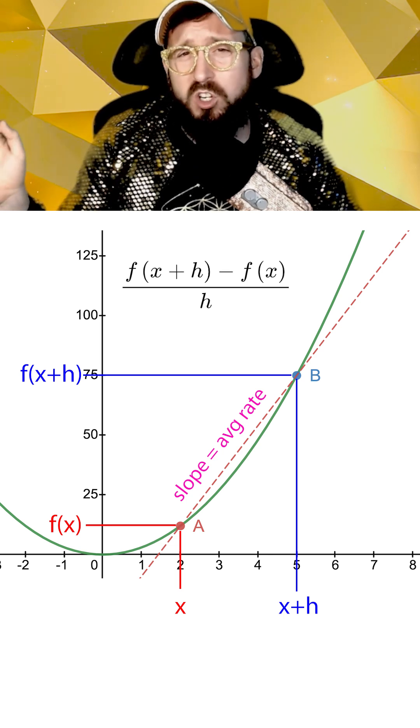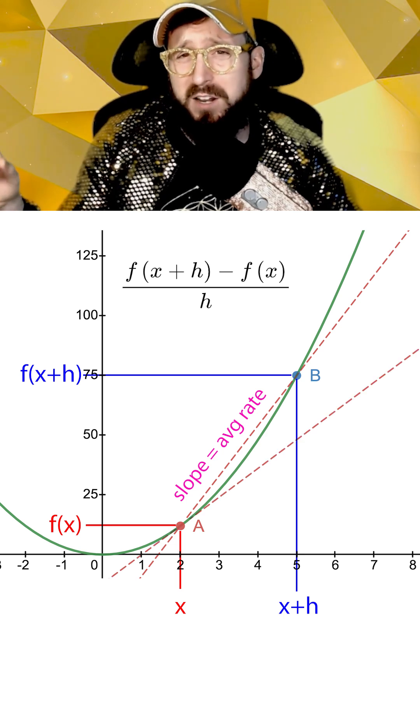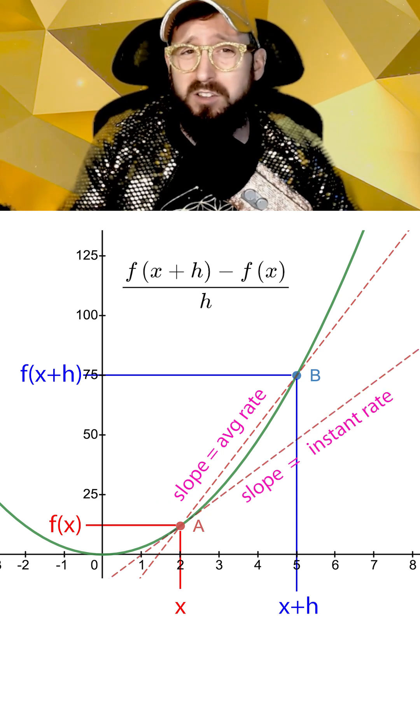Now, while this average slope is a good estimate of the overall rate of change from point a to point b, we can see that it's pretty bad for estimating the slope closer to point a, where the function isn't increasing nearly as quickly.